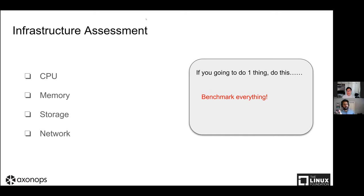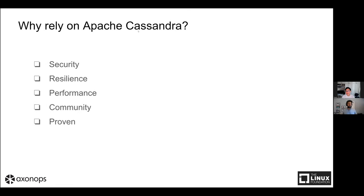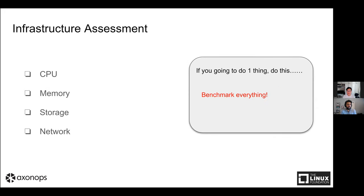NVMe drives are absolutely phenomenal. When you can get two gigabytes per second of throughput at 100 microsecond P99 latency out of your storage it completely removes storage as the bottleneck for a database. Generally in production you're talking about a minimum of 8 cores and possibly a maximum of 32 cores. Having too many cores means you can't leverage them all effectively.